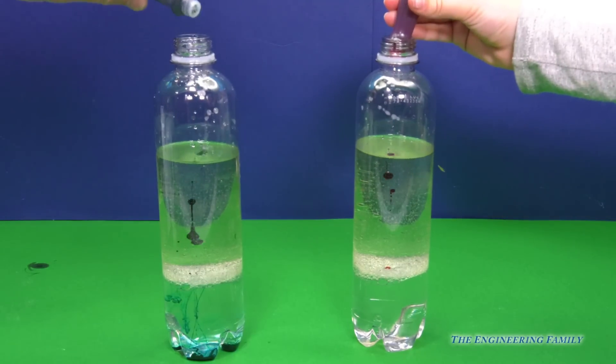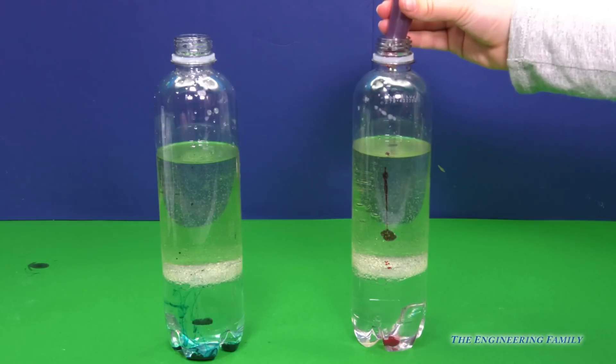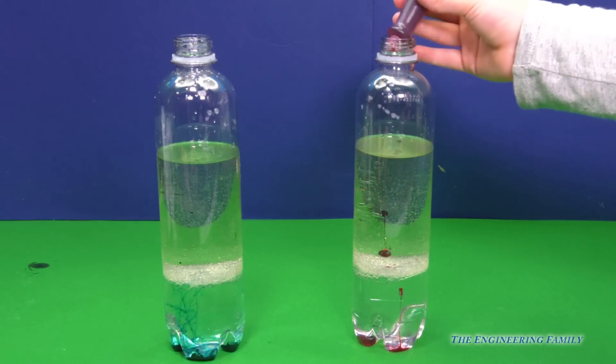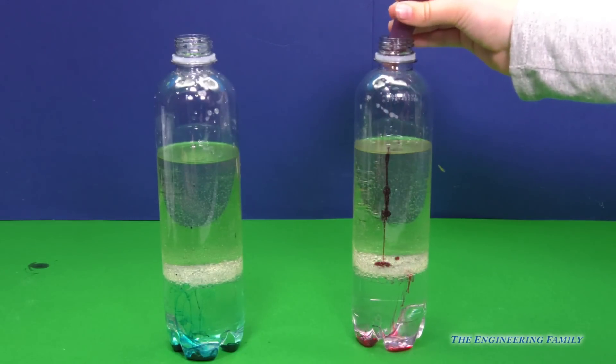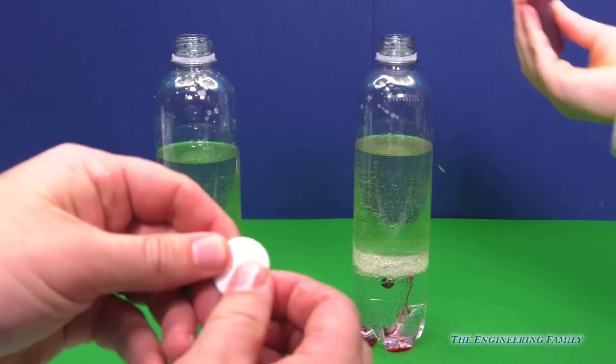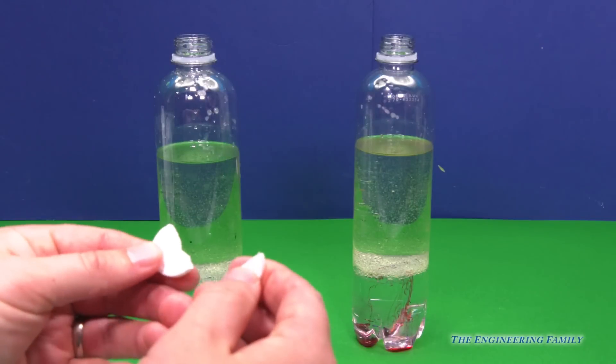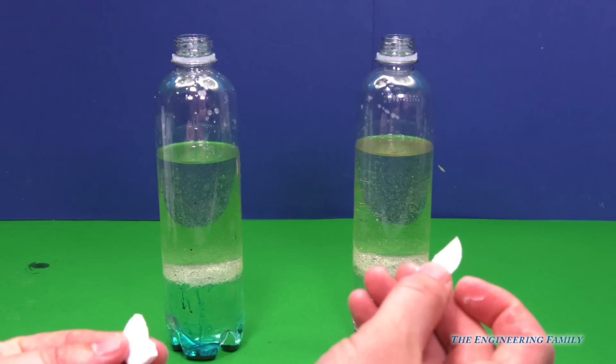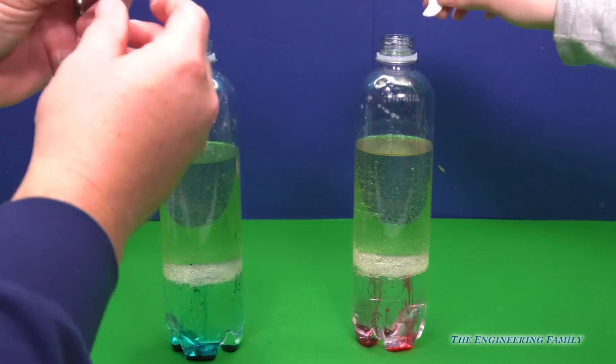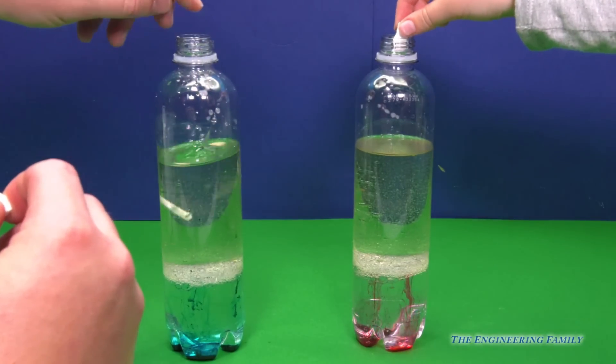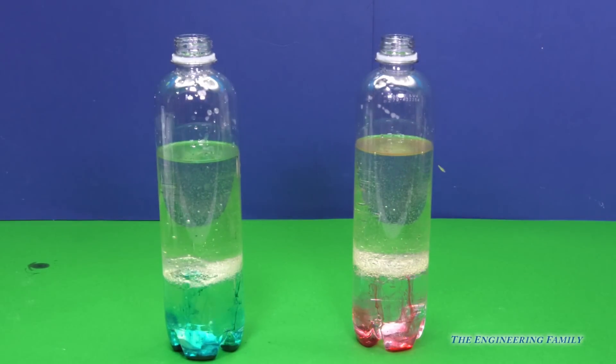And then we've got a secret ingredient. It's Alka-Seltzer. So this is Alka-Seltzer. It causes fizzles, and you put that on your side. And I'm gonna put this on my side, so I'm gonna have to break mine a little bit more. Drop it in. And let's see what happens.